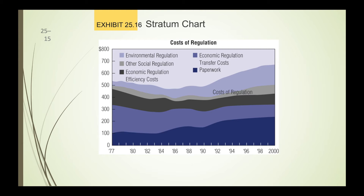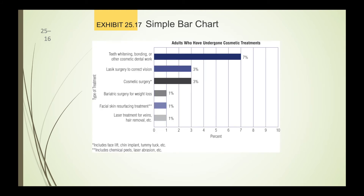The stratum chart is just a variation you can use to compare how things pan out in relation to other elements on the chart. The bar chart is fairly simple and very common — this one goes across a horizontal axis showing teeth whitening, bonding, and laser treatment for veins, representing adults who have undergone cosmetic treatment. At the bottom you have footnotes. The good thing is that in Microsoft Word you can create bar charts or pie charts — it's just a matter of plugging in the data and the computer does the rest.